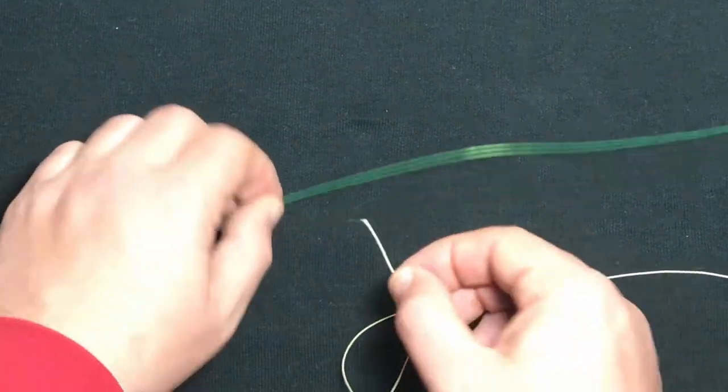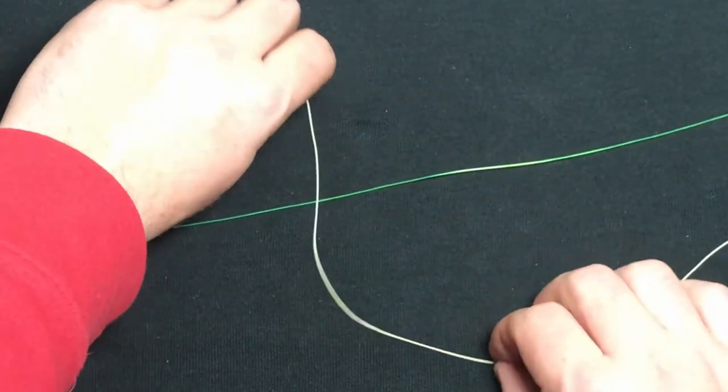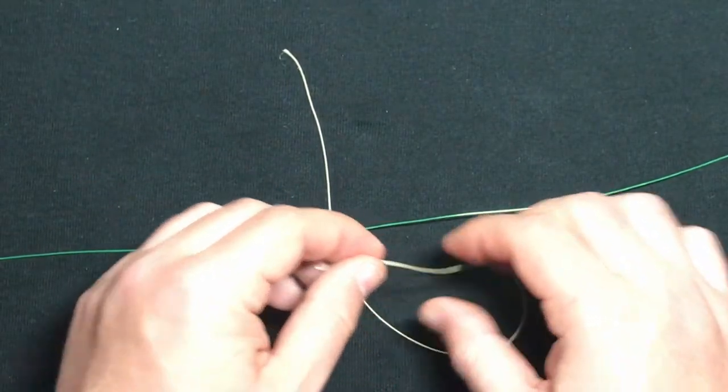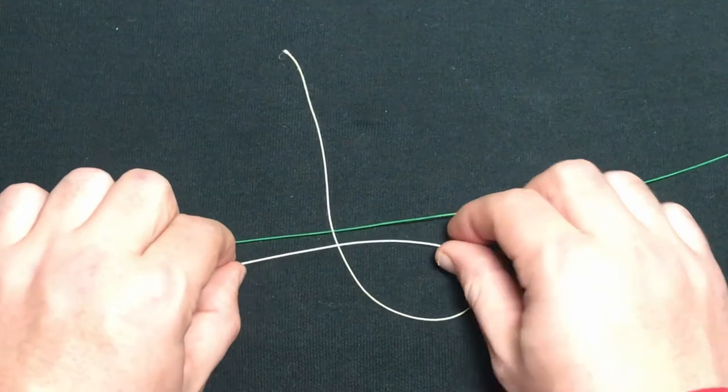The first thing we're going to do, we're going to take a tag end and slide it up under the main line. We're going to take our second tag end and lay it across this section of the line, forming a loop.